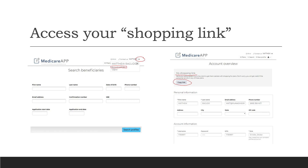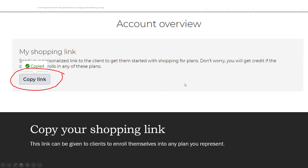I would suggest accessing your shopping link and saving it. To access your shopping link, go to that same landing page, click on the down arrow, go to account overview, and you'll land there. From there you can copy your shopping link — once it's copied, a green checkmark will appear saying 'copied.'